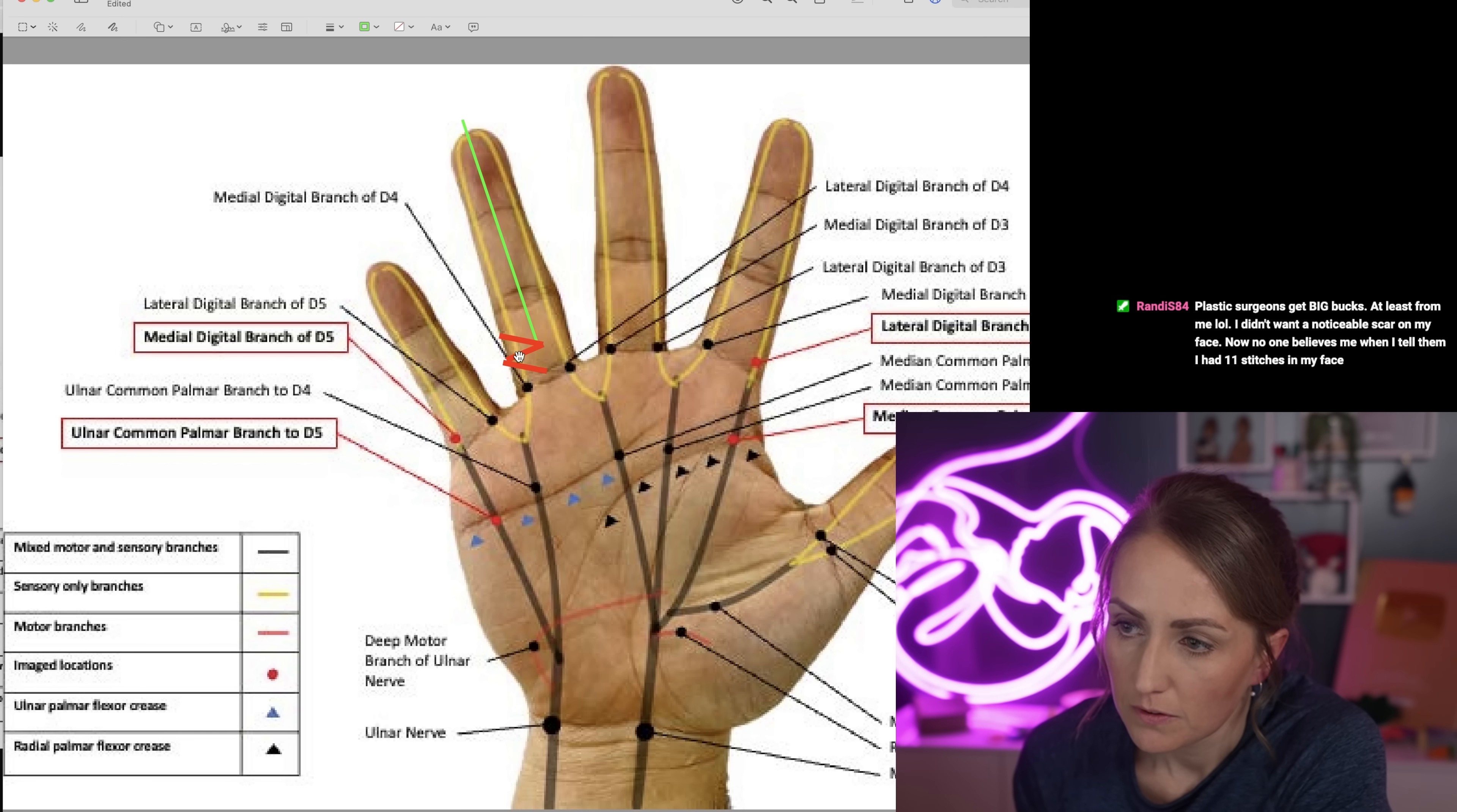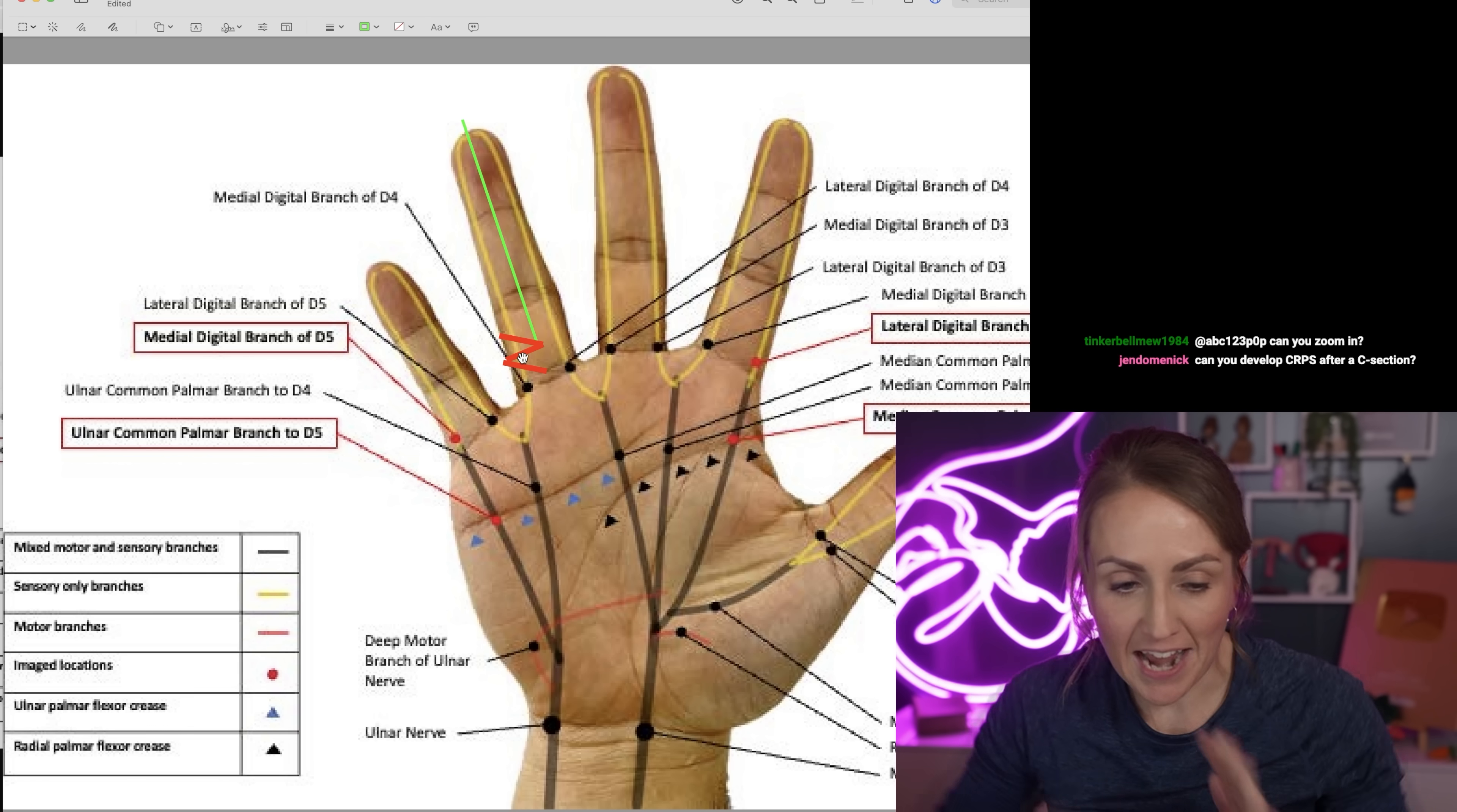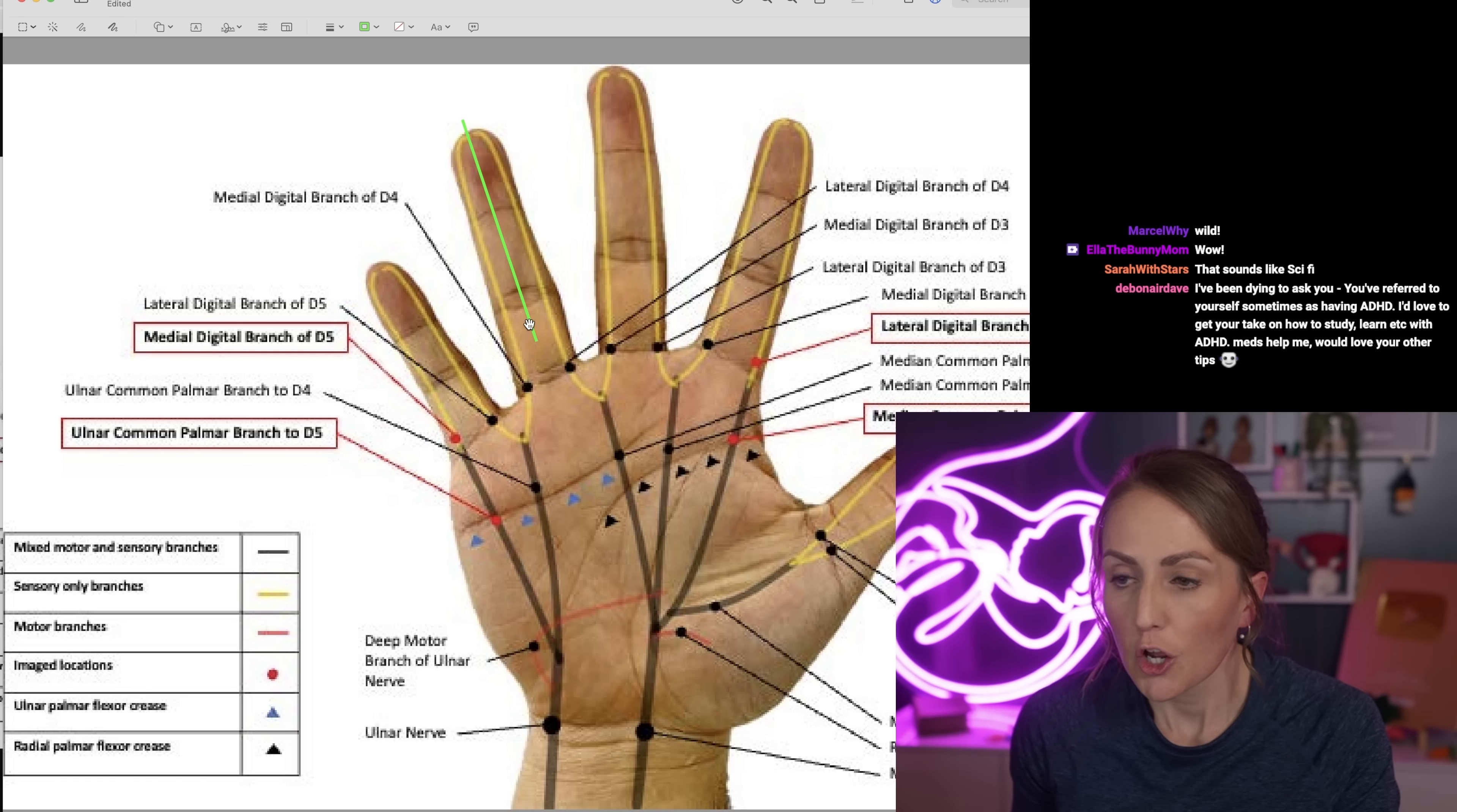They made a Z-shaped incision here because that's how you get it to where you can bring it back together and went in, used a microscope, found the two sides of that nerve, and sewed it back together with the smallest little suture anybody had ever seen in their whole entire life. All right, now finally to the point of the story, which is because somebody had asked about the feeling of their c-section.